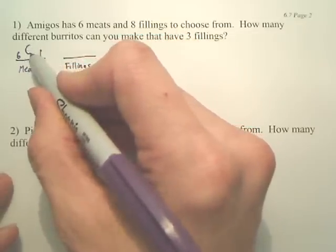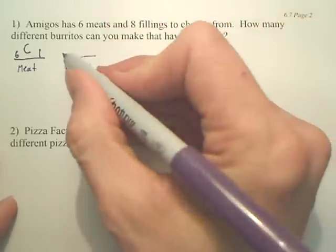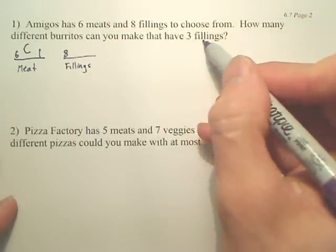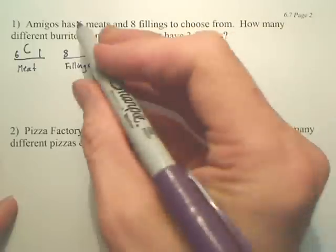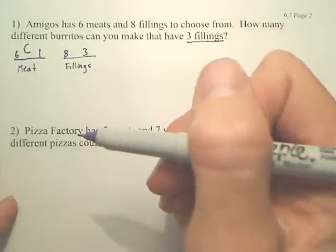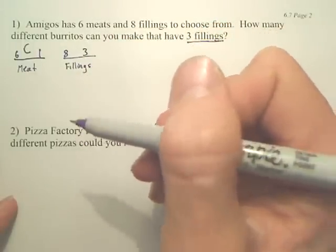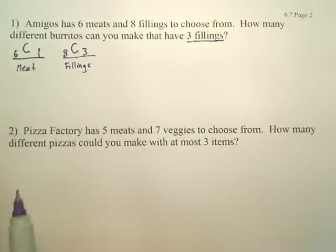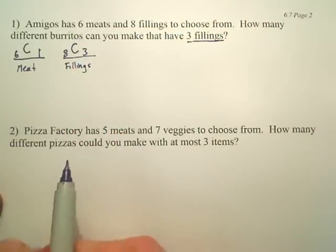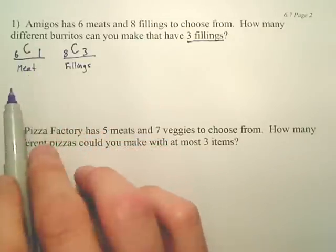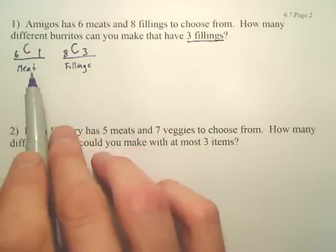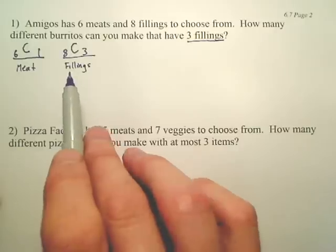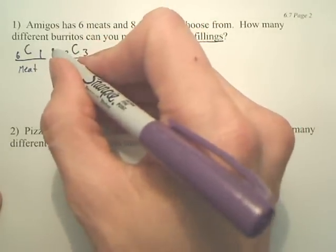So it's C. Now the fillings — you have eight to choose from, and out of that eight, how many do we want? It says three. Does it matter the order in which they're in your burrito? Not really, because they're going to get mixed up pretty quick anyway. Next, do we have meat AND fillings, or meat OR fillings in our burrito? There's an AND there — ands are multiplied.